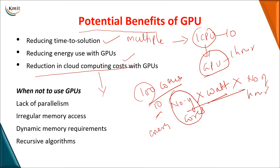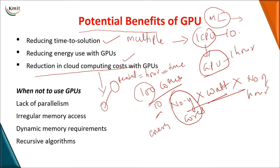The last benefit is reduction in cloud computing cost. Cloud computing means you are using resources from another organization on a rental basis, paying on an hourly basis for the time you use them. For example, a machine learning model executed on a CPU may take 10 hours, incurring more cost. The same application on a GPU may take only one hour, so you pay only for that one hour — reducing cloud computing cost significantly.